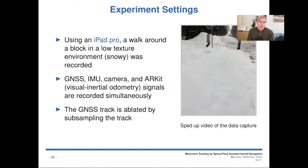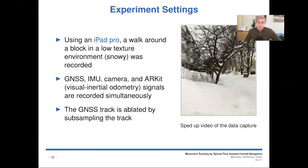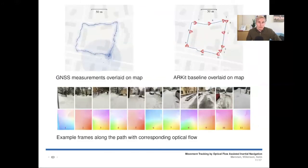And the GNSS track that is measured is ablated by subsampling. Here on the top left, we have the full GNSS measurement track overlaid on the map. And from this, most of the measurements will be removed for the experiments. And on the top right, we have the ARKit baseline track overlaid on a map. And we have 11 positions on the track shown. And for those positions, we have the camera view and the associated optical flow here in the images on the bottom.